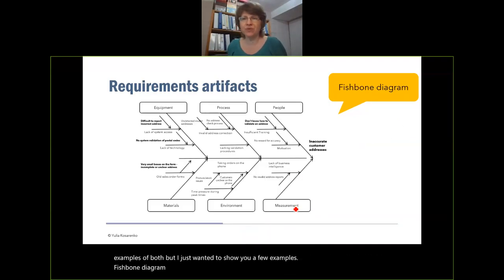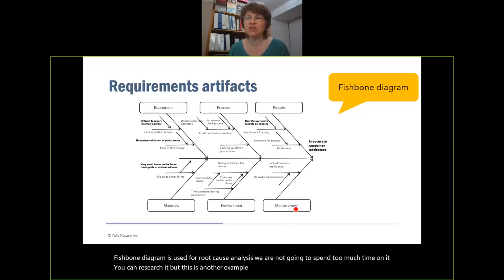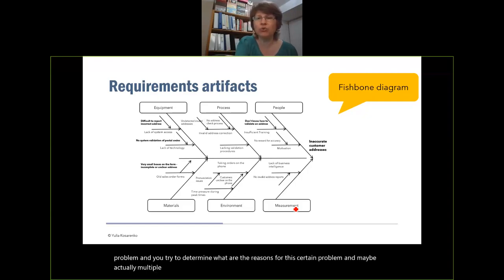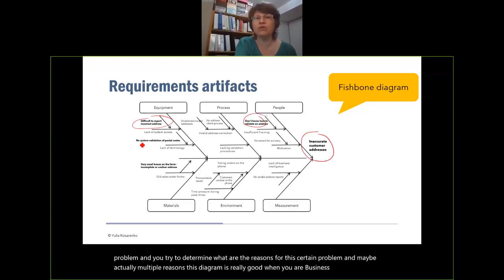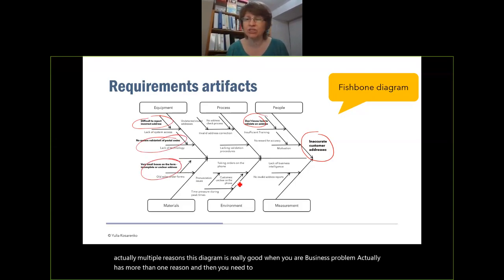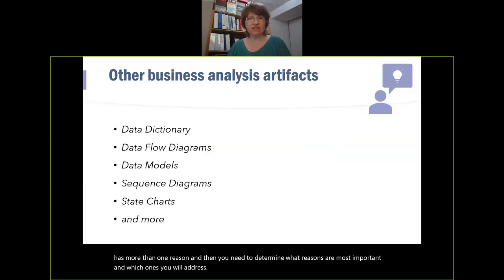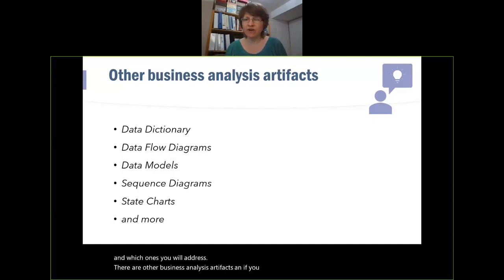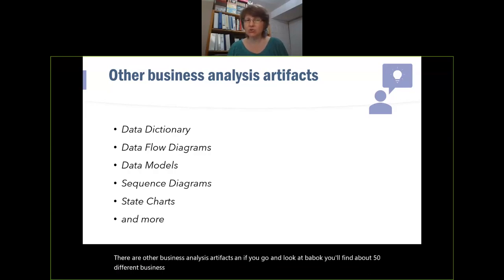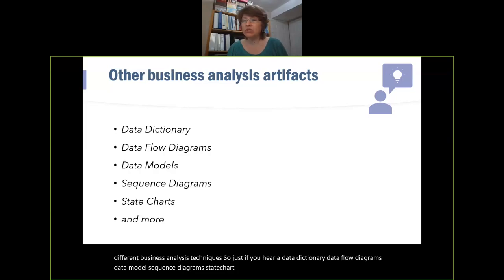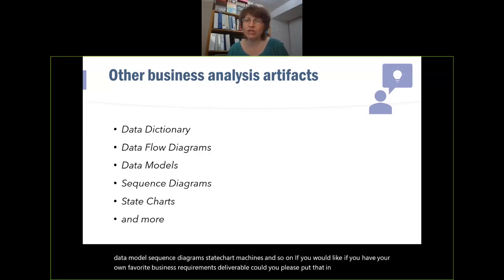The fishbone diagram is used for root cause analysis. This is another example — you may be investigating a business problem and trying to determine what the reasons for a certain problem are, and there may be multiple reasons. This diagram is really good when your business problem has more than one reason and you need to determine which reasons are most important and which ones you will address. There are other business analysis artifacts — if you go look at BABOK, you'll find about 50 different business analysis techniques: data dictionaries, data flow diagrams, data models, sequence diagrams, state chart machines, and more.